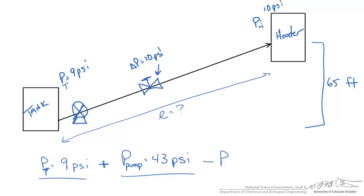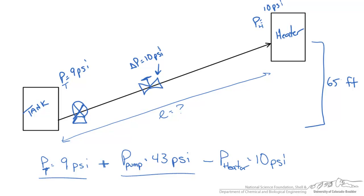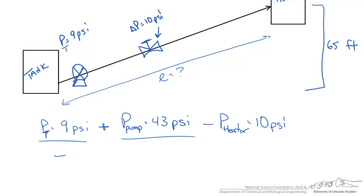We're going to subtract out what we're finishing with, which is the pressure of the heater at 10 psi. Then we're also going to subtract out the losses due to the valve, which is 10 psi.